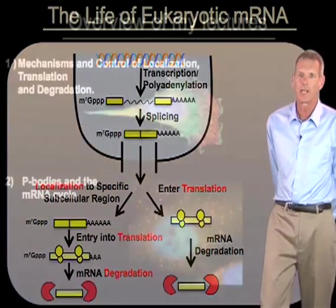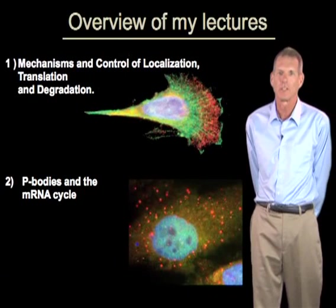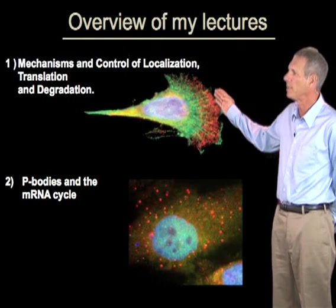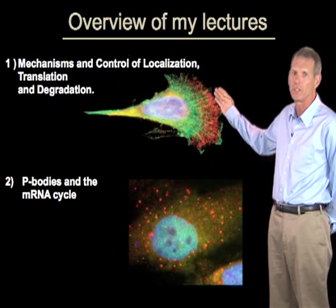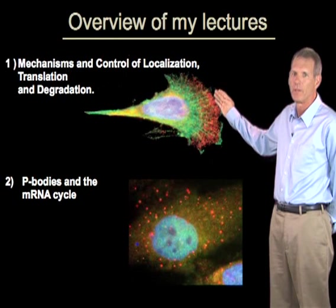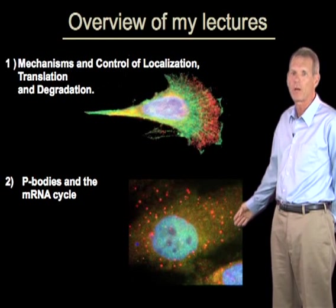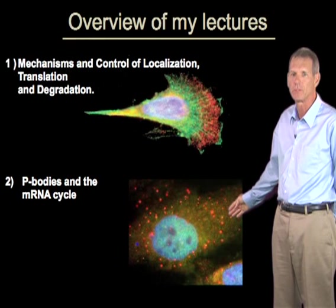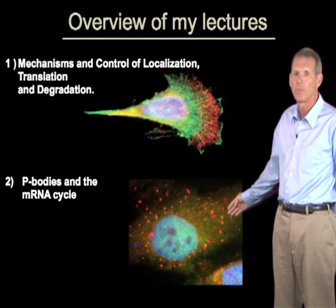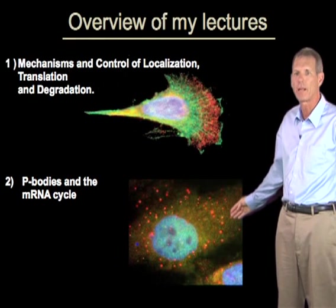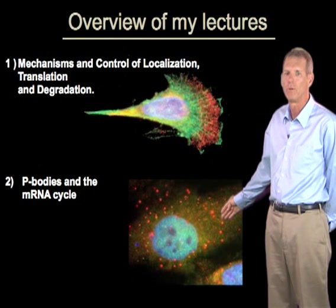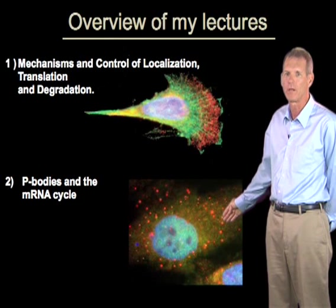In my talks today, I'll cover two areas. In the first lecture, I'll talk about the mechanisms and control of localization, translation, and degradation. And then in the second part of my talk, I'll talk about structures in the cells we've been studying, referred to as P-bodies, and what they tell us about a dynamic transition mRNAs undergo, which we refer to as the mRNA cycle.